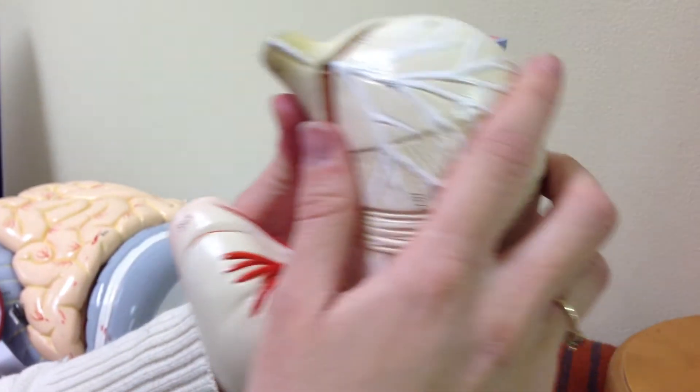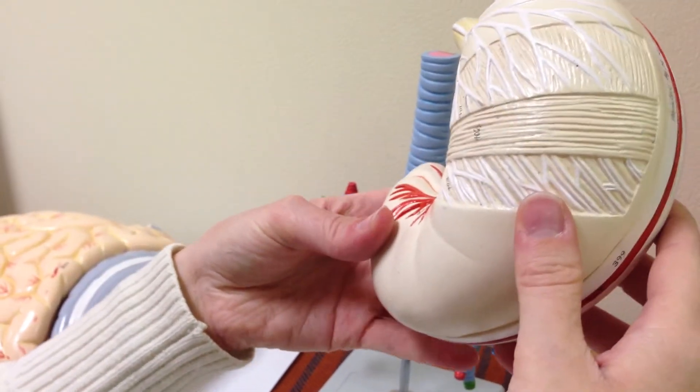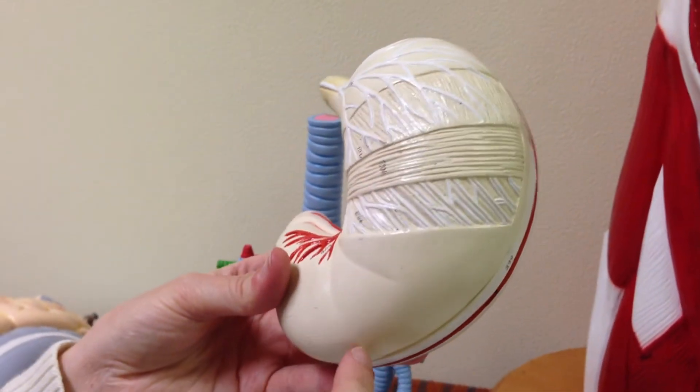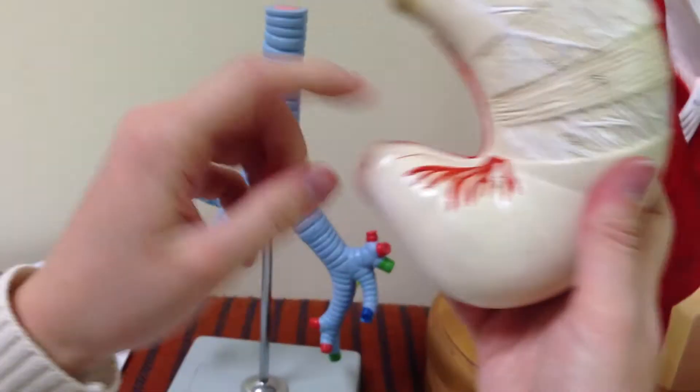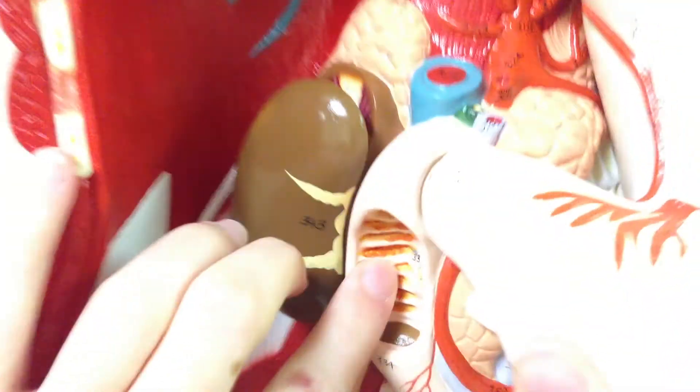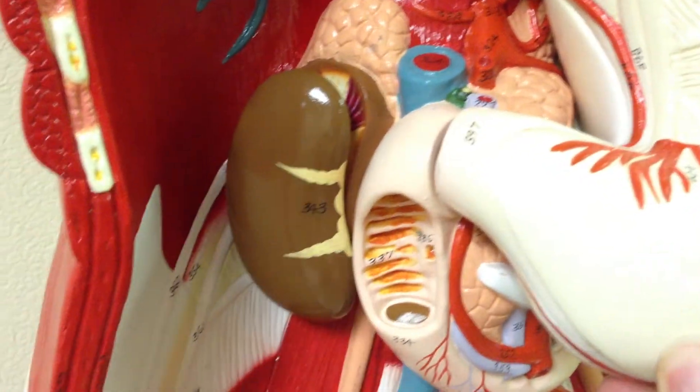Let's put that back together. And then you have the greater curvature which is right here. And then you have the pylorus which is down right here, and then the pyloric sphincter which opens up into the duodenum. So it allows food going from the stomach into the duodenum.